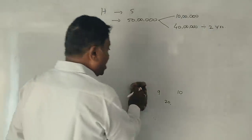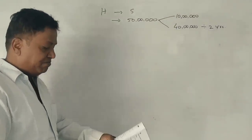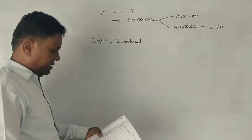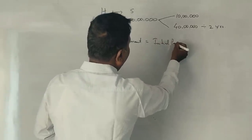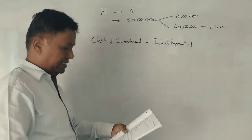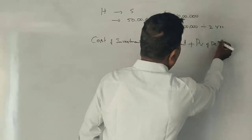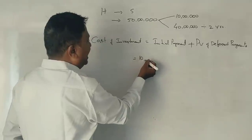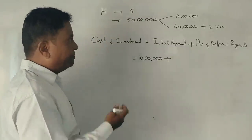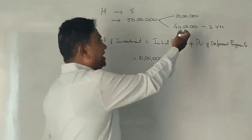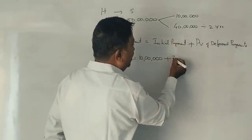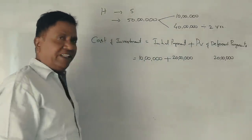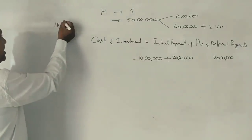Now calculate the present value factors using the discount factor. Cost of investment equals initial payment plus present value of deferred payments. Initial payment is 10 lakh rupees. The deferred payments are 40 lakh rupees divided by 2, giving 20 lakh rupees per installment — one in the first year and one in the second year — discounted at 15% per annum.